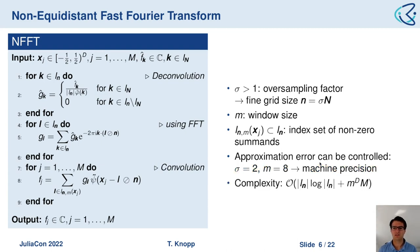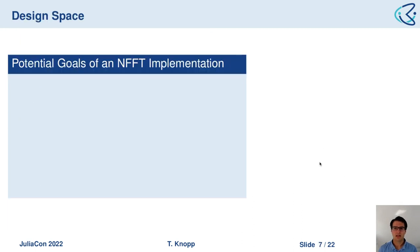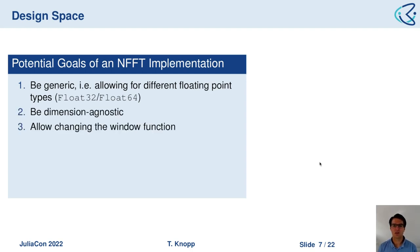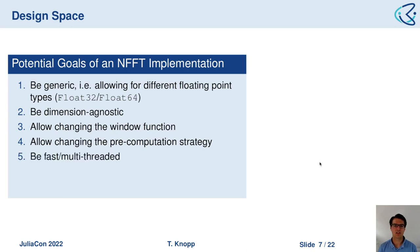The complexity is n log n plus M. Now let's look at the potential design space. What could be goals of an NFFT implementation? First, it should be generic in the data type, dimension-agnostic, and allow changing the window function. It should have different pre-computation strategies to speed up computation, be as fast as possible including multi-threaded implementation, and the code should be readable and maintainable.